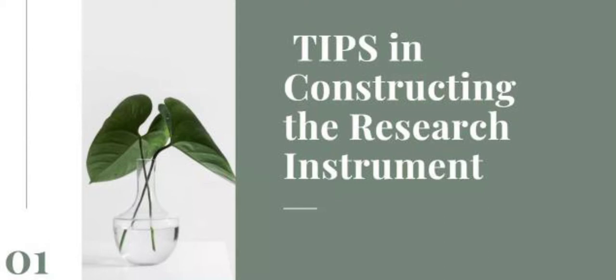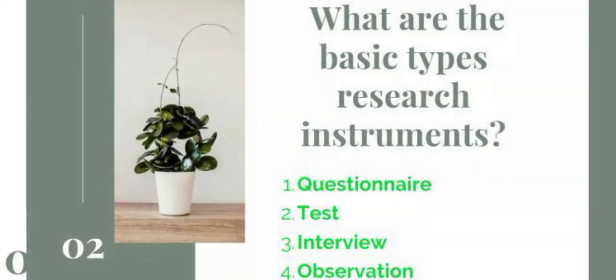First question: what are the basic types of research instruments? I would like to focus on the basic types. We have the questionnaire, and then we also have a test. It can also be an interview or an observation, and many more — we can also have a focus group discussion and other types. But these are the basic ones.